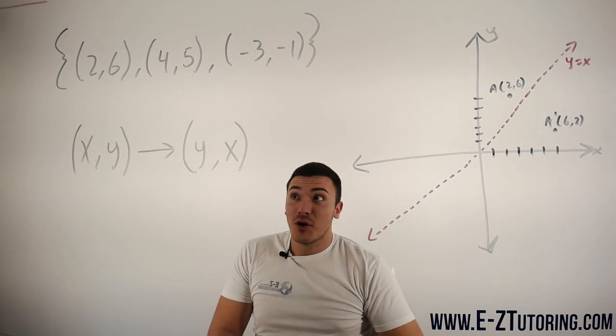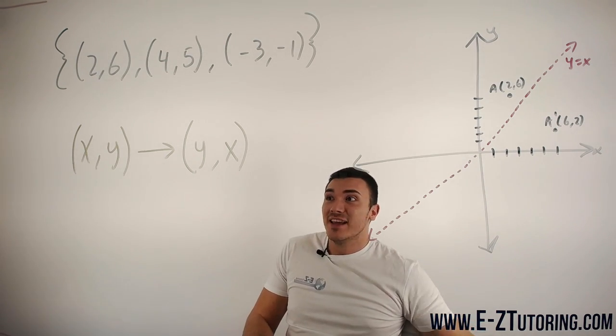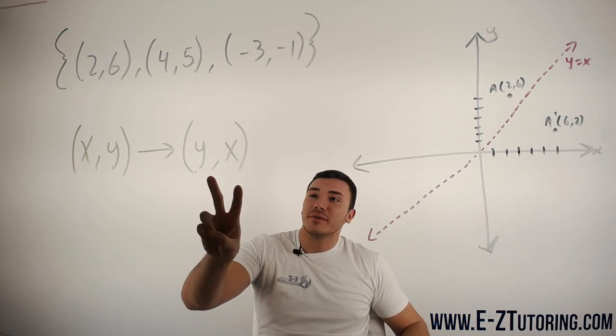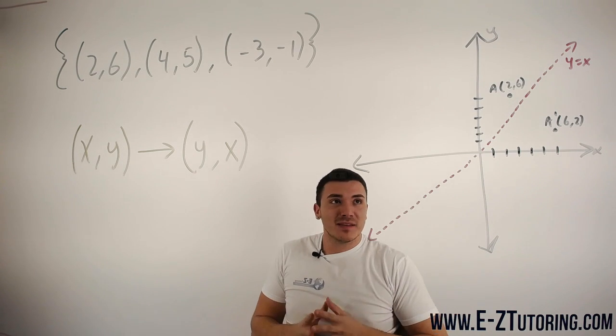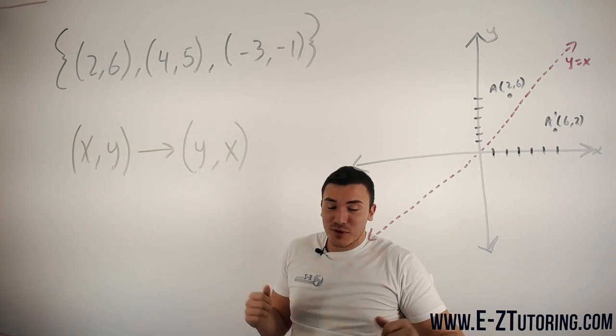Pretty much all you need to do to find the inverse of coordinates is just switch them around. That's it. That will show you where they reflect across the line y equals x, which gives you your inverse.